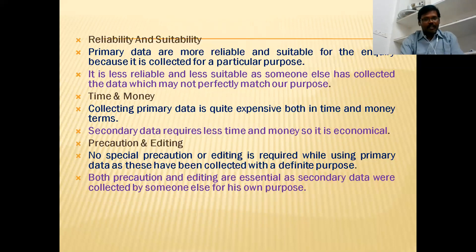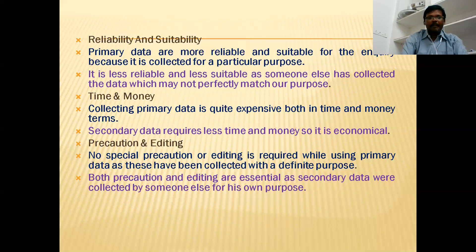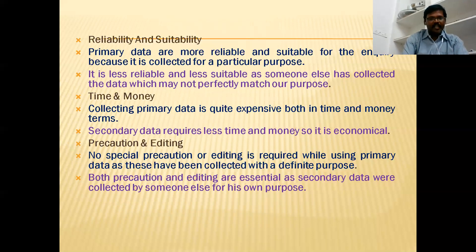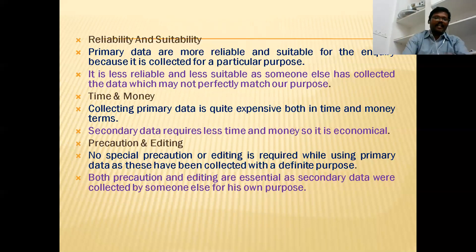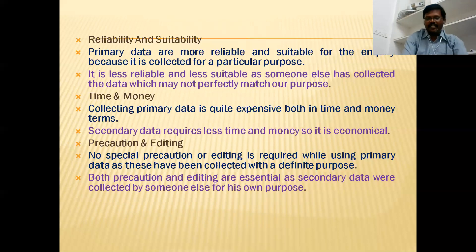The precaution and editing: when using secondary data, no special precaution or editing is required — because it is already there. But while using primary data, yes, these have been connected with a definite purpose and with a systematic purpose and original data is there. So that's why it is required to mobilize, to edit, to take precautions — anything related to primary data.